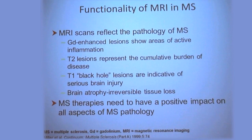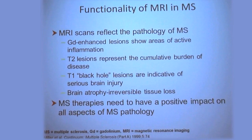MRIs are really very important, not only in the diagnosis but the management of multiple sclerosis. It's one of the best surrogate markers that we have for evaluating somebody to see if they have multiple sclerosis and to identify those who are progressing in the disease. There are a number of different types of lesions that we see on an MRI.